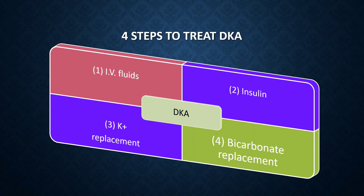There are four crucial steps to treat DKA. The first and most important is IV fluids — intravenous fluid. The second is insulin. The third is potassium replacement, and the fourth is bicarbonate replacement.